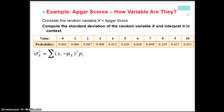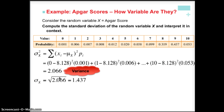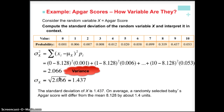Let's work through the APGAR example again to find the standard deviation using summation notation. For our first value — zero minus our mean, squared, times the associated probability — and continue through all values showing the first two, plus dot dot dot, and then the last value. Adding them all together gives us the variance. Taking the square root of that gives us the standard deviation. The interpretation is: on average, a randomly selected baby's APGAR score will differ from the mean of 8.128 by about 1.4 units.